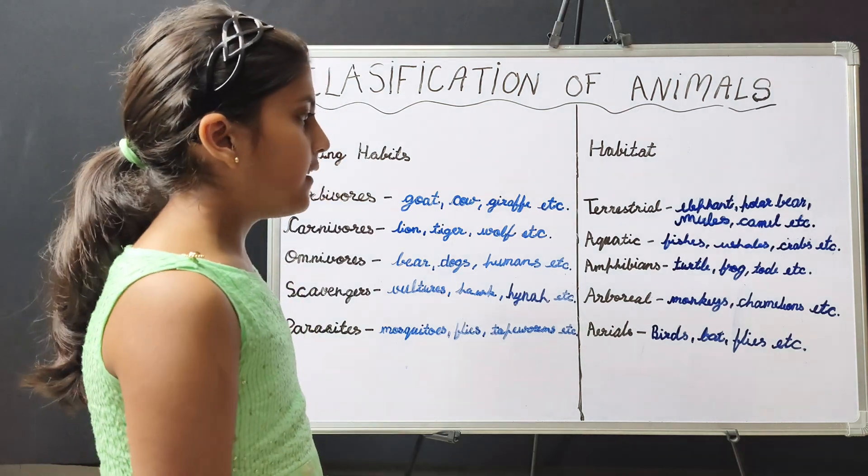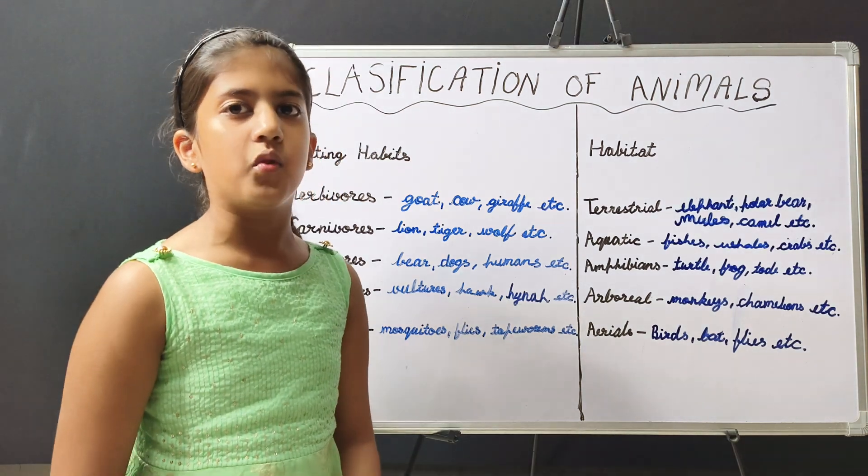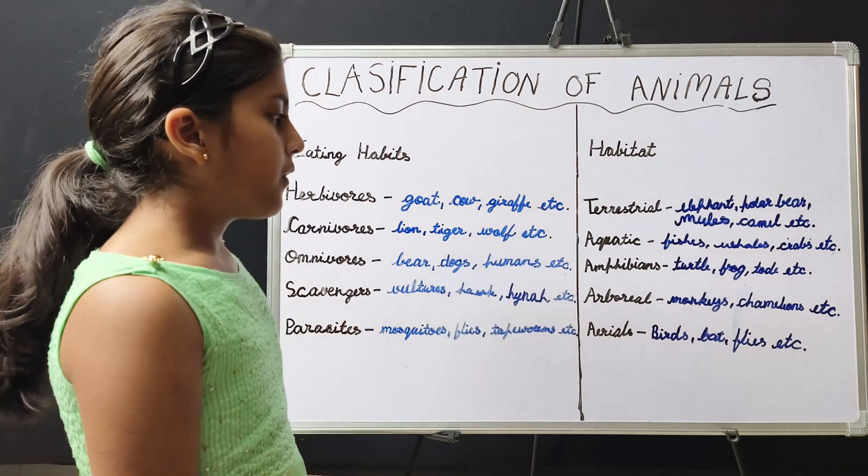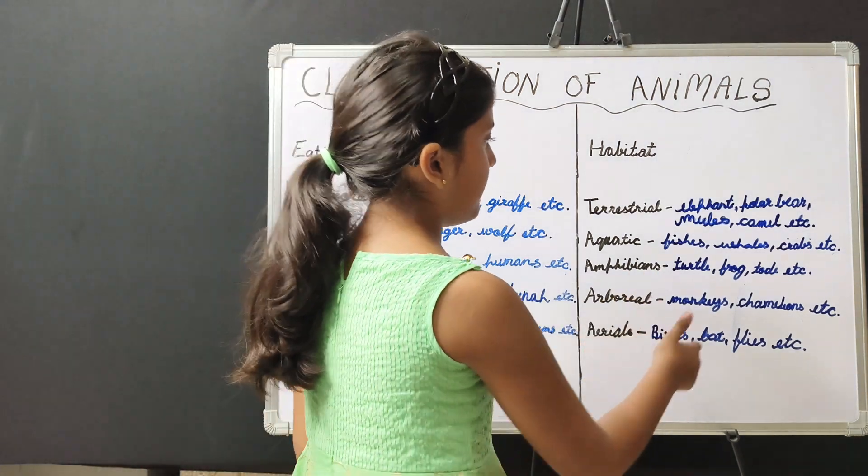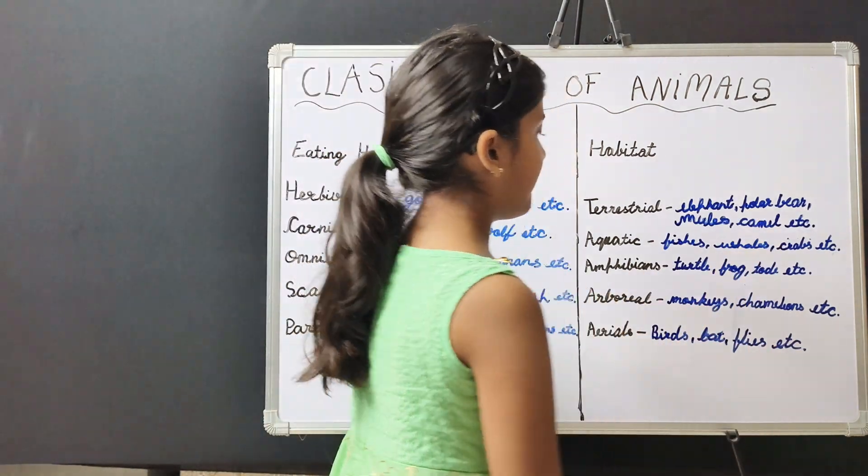Arboreal animals are those animals which live on trees. For example, monkeys, chameleons, etc.